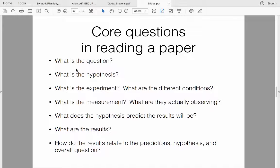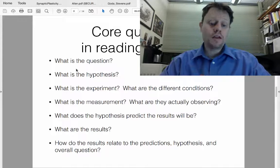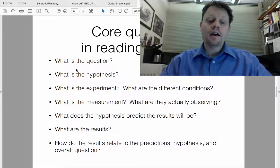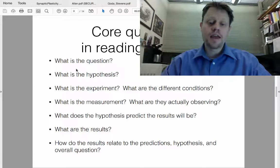So, we've discussed already the questions you might ask yourself when you're reading a paper. That is, what are the scientific questions and hypothesis, what's the experiment and different manipulations, what's the measurement - be sure to keep those last two things straight - the prediction that the hypothesis makes specifically about the results of this experiment, and then the results and the relationship between those results and the hypothesis and predictions.